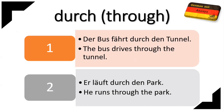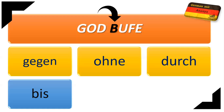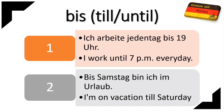The next preposition is D, which is durch, and durch means 'through.' For example: 'Der Bus fährt durch den Tunnel' — The bus drives through the tunnel. Another example: 'Er läuft durch den Park' — He runs through the park.